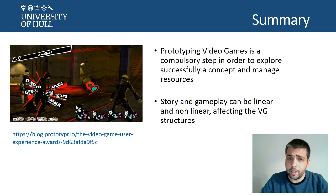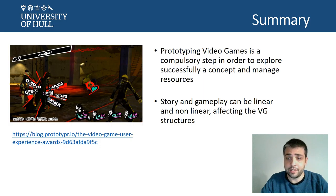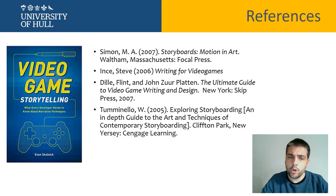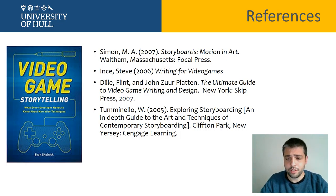So far we have been looking at prototyping video games — specifically how to talk about the structure and how to prototype that structure using diagrams, flowcharts, and other tools. Story and gameplay can be linear or non-linear, and this is reflected in that structure. If you want to know more about narrative in video games, I recommend different readings, specifically Stephen's writing for video games, which simplifies the main elements of designing narrative for video games. And this is all for today — I hope you have enjoyed this lesson and see you in the lab. Take care.